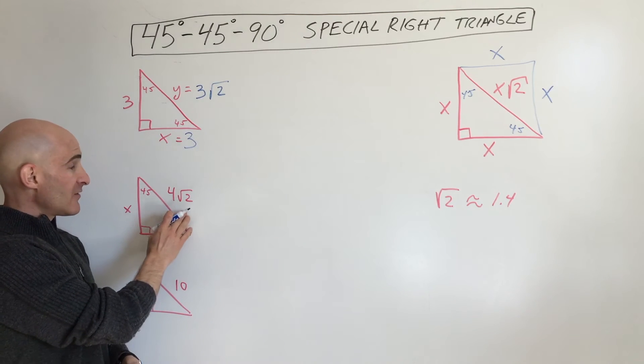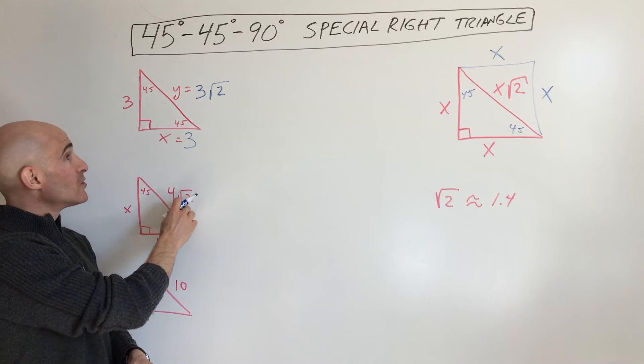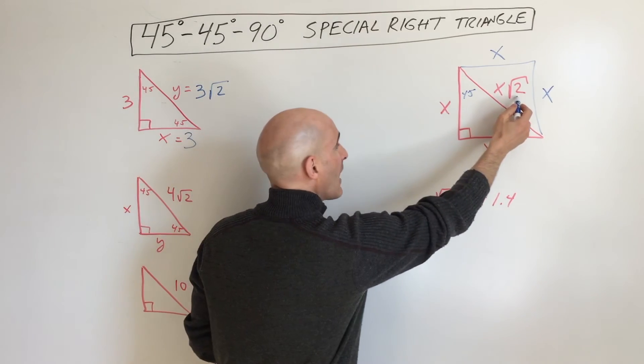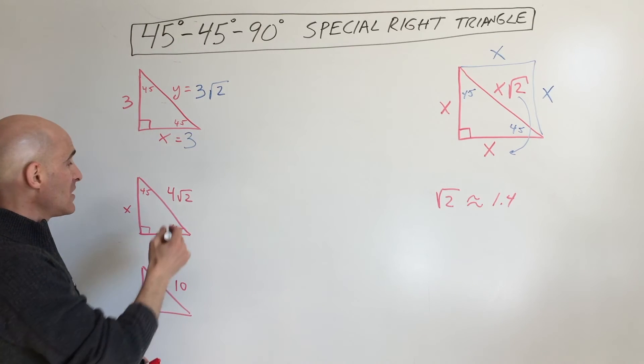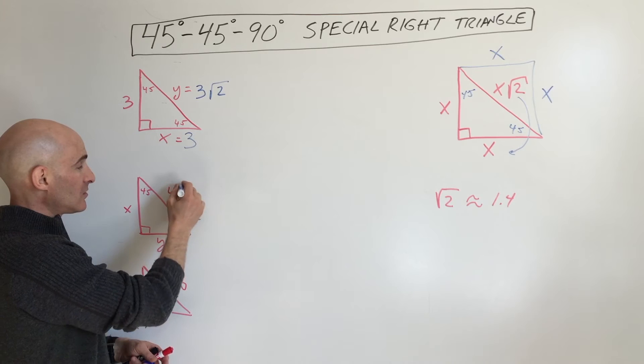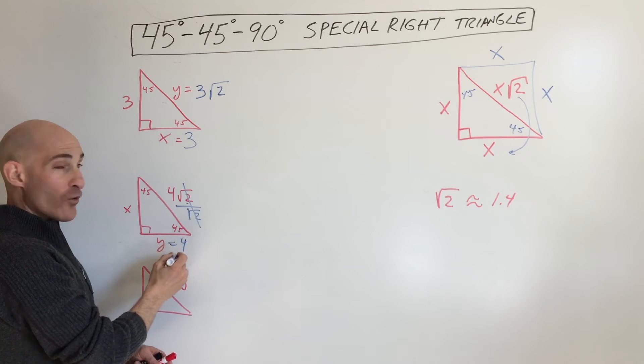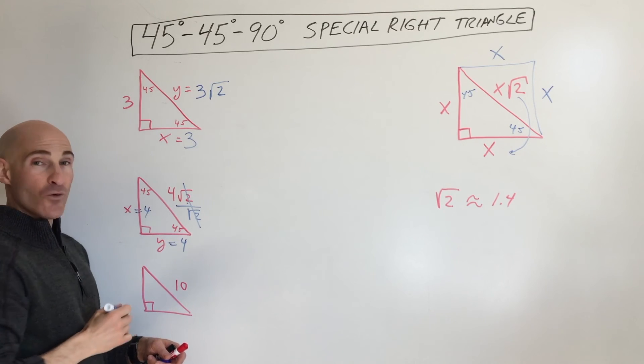Okay, now in this one, they're giving us the hypotenuse, 4 square root of 2. So what we're going to do, to go from the hypotenuse to the leg, we have to divide by the square root of 2. So what's 4 square root of 2 divided by square root of 2? Well, you can see that's going to be 4. And because this is isosceles, both of these are going to be congruent. So this is going to be 4.